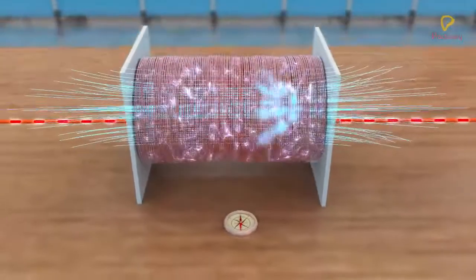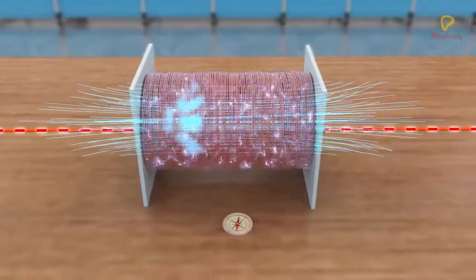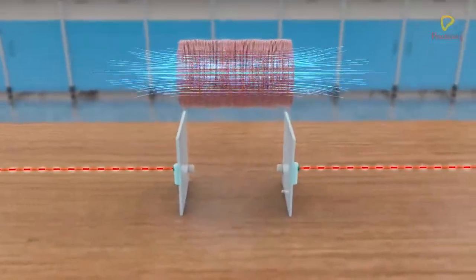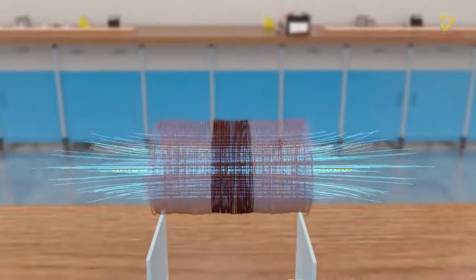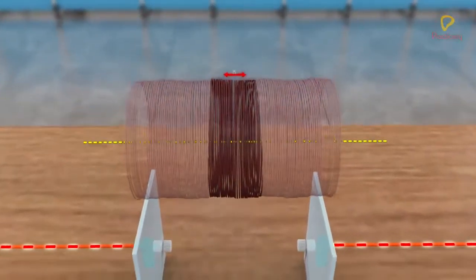Outside the solenoid, the magnetic field is very weak. Let us calculate the magnetic field due to a current carrying solenoid having n turns per unit length.